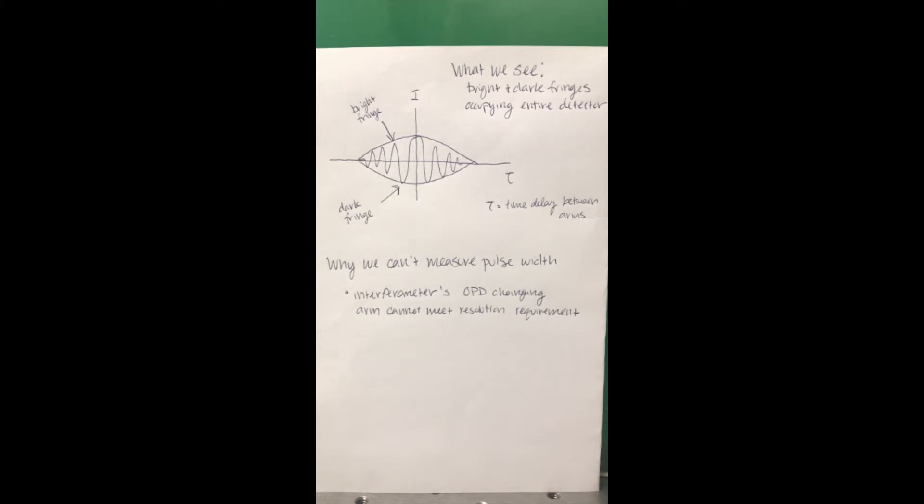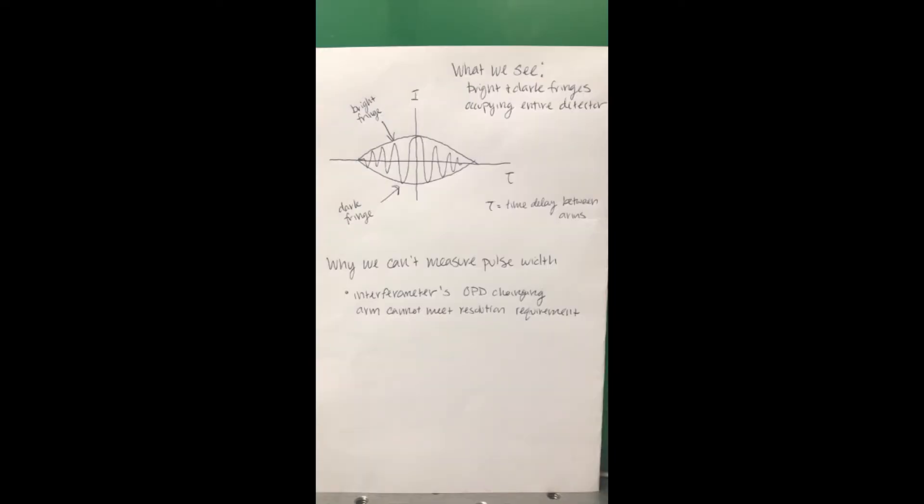I've drawn that here in our graph where you can see the bright fringe at the top and dark fringes at the bottom, with tau or the time delay between the two arms as the x-axis and intensity as the y-axis.